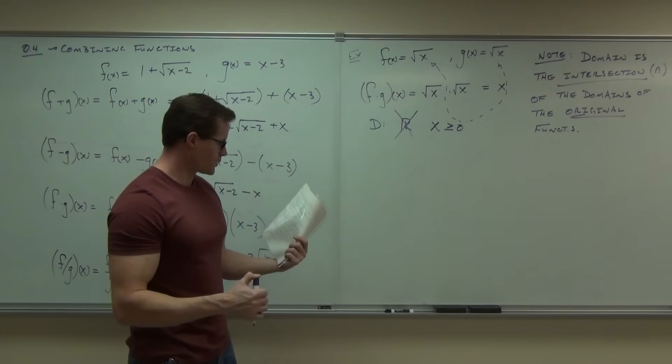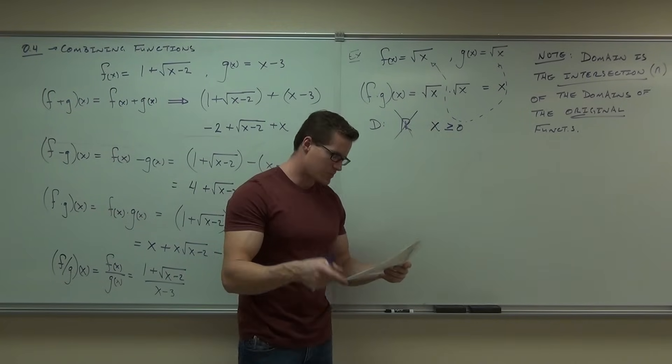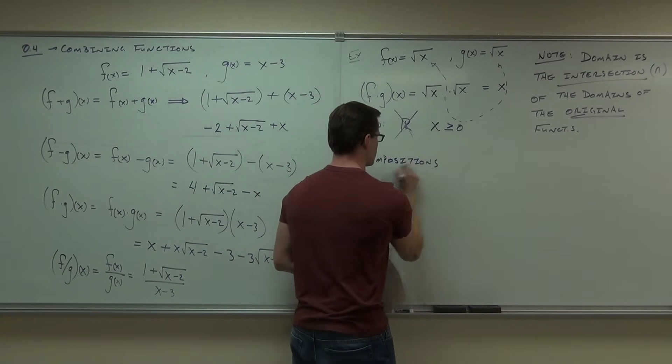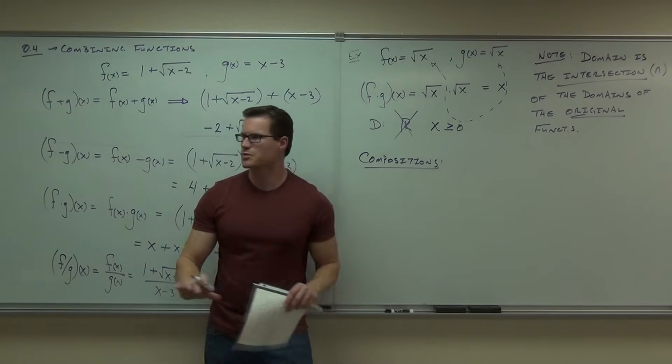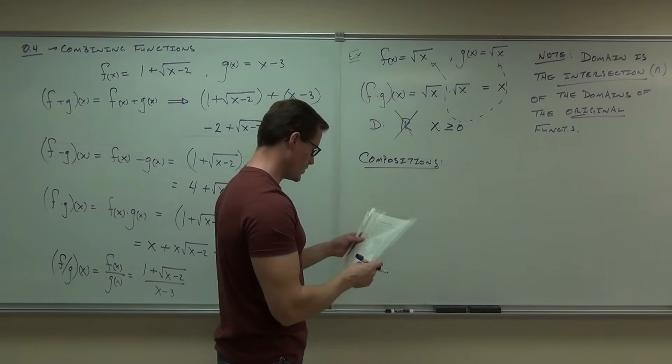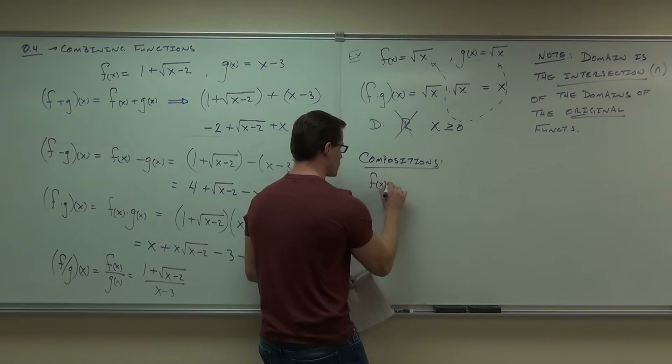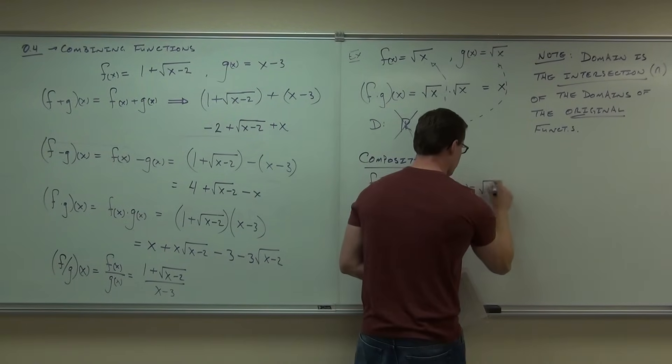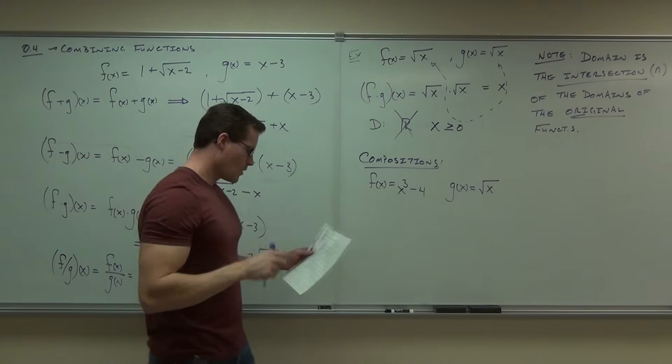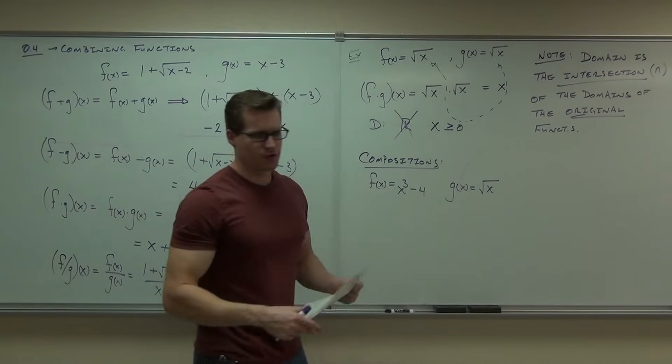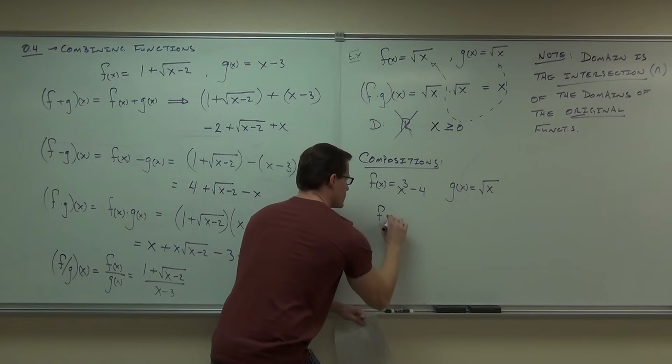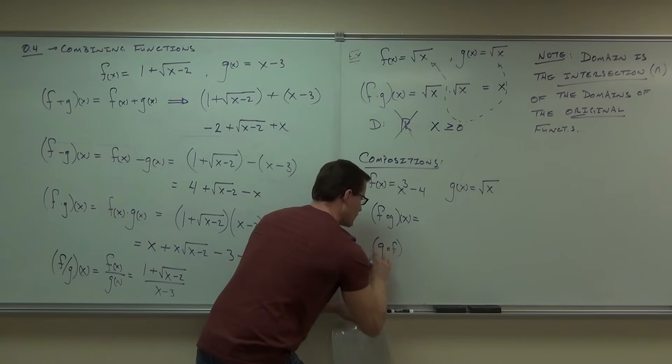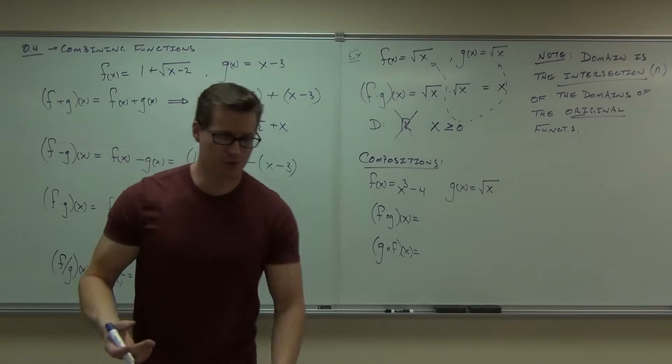The last thing we're going to talk about, we can also compose functions. This will be the last thing that we do. Just make sure that you know how to do compositions. I'll go really quickly through this. This is an intermediate algebra concept, so I'm going to make sure that you know it. What we mean by compositions is if I have f(x) equals like x³ - 4 and g(x) is √x, we're basically just substituting in one function for another. So these two things, unless they're inverses, will have different answers. If they are inverses, their answer will both be x. That's how you tell whether two functions are inverses or not.